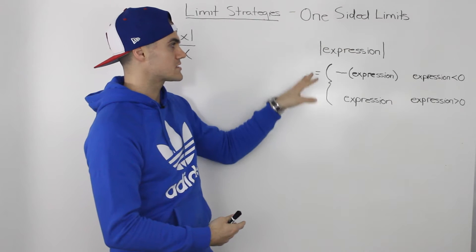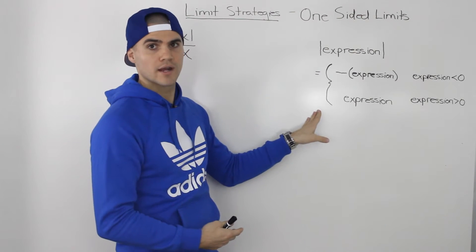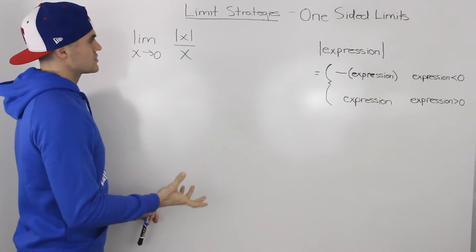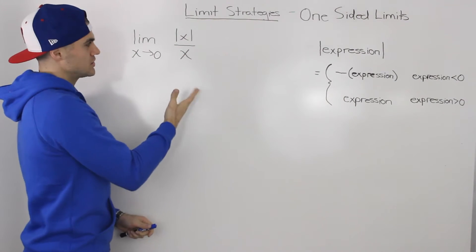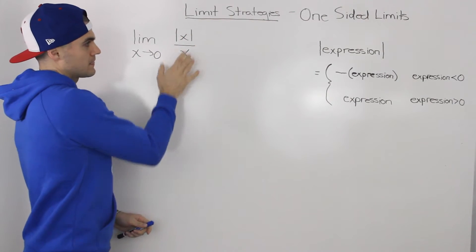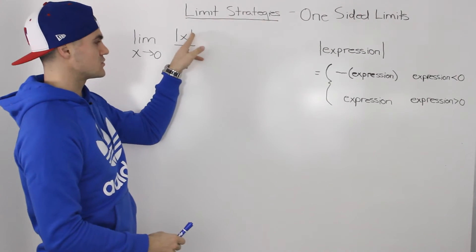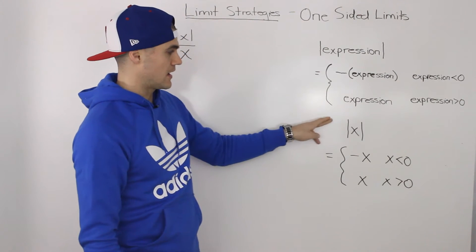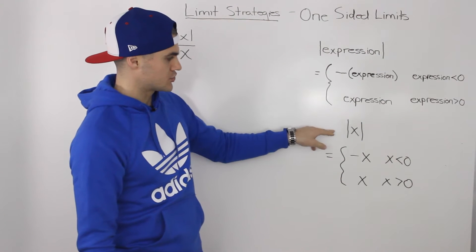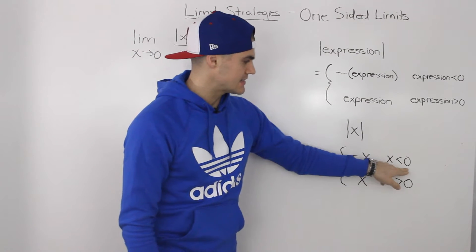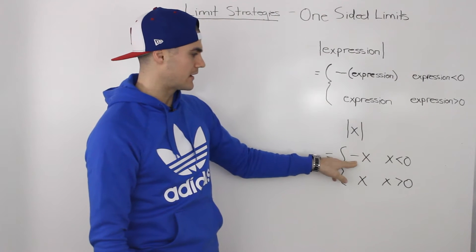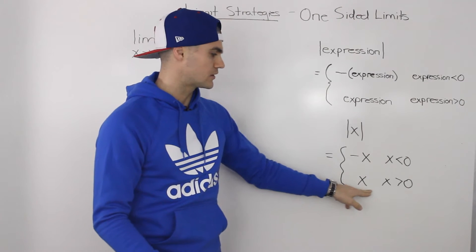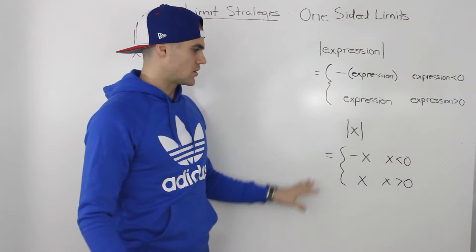This result is what we're going to be using for this example and any future examples dealing with one-sided limits, so I'd highly recommend you write it down. Going back to our specific example, the first thing you want to do is take the absolute value expression and use this result to change it into a piecewise function. Taking the absolute value of x: when x is less than zero, multiply by negative one; when x is greater than zero, leave it as is.